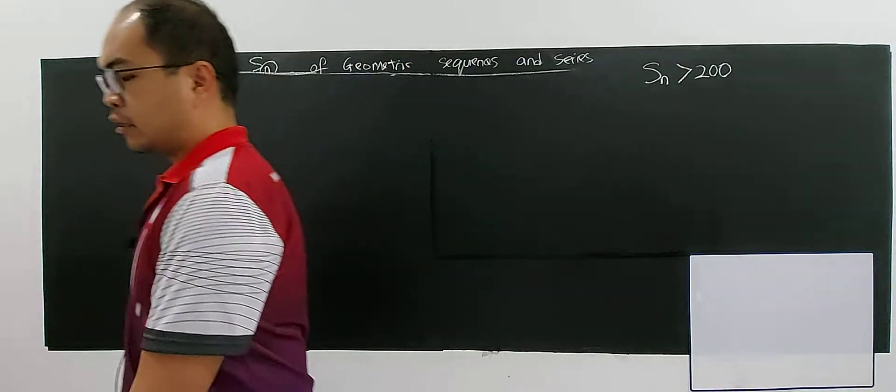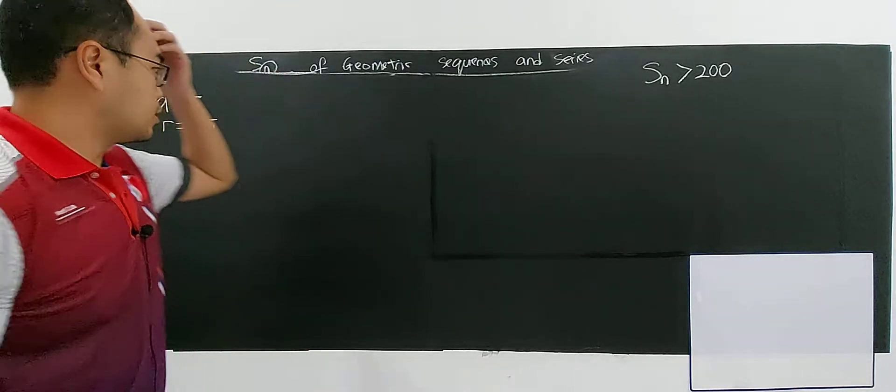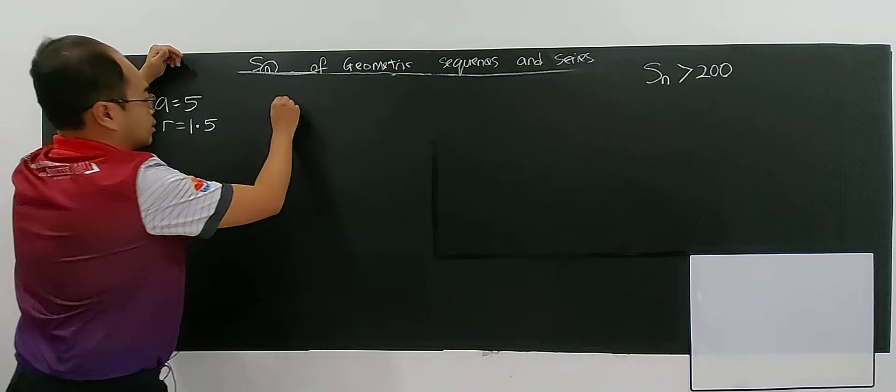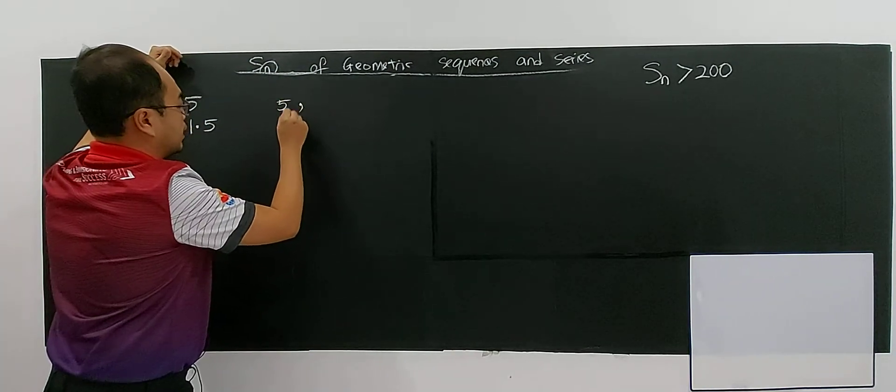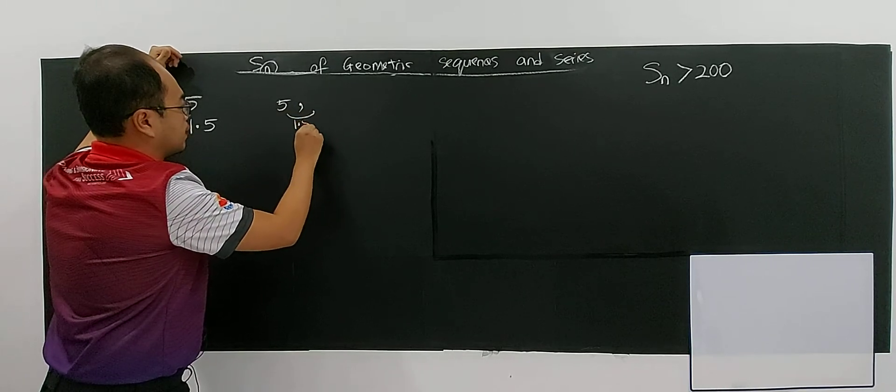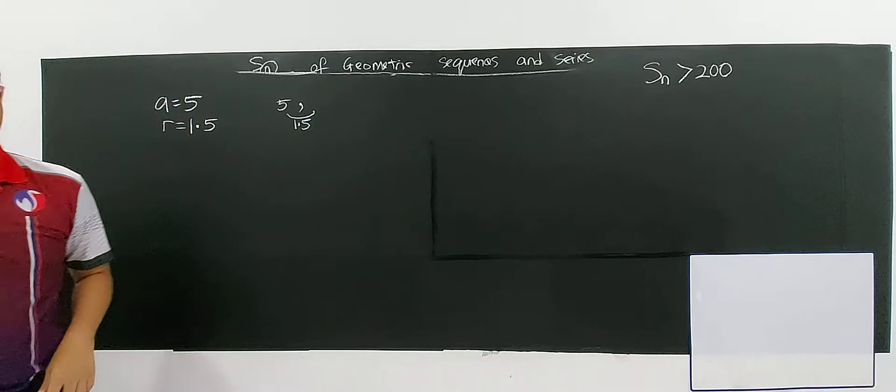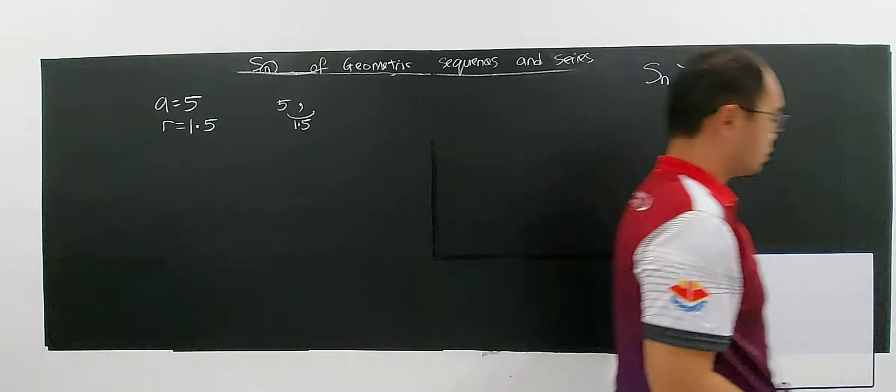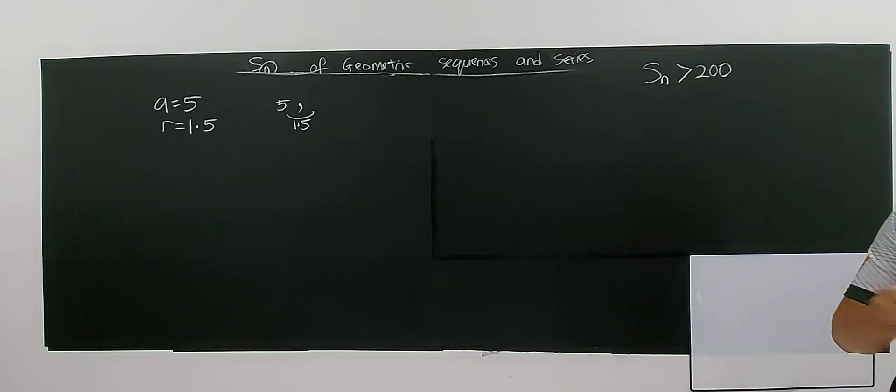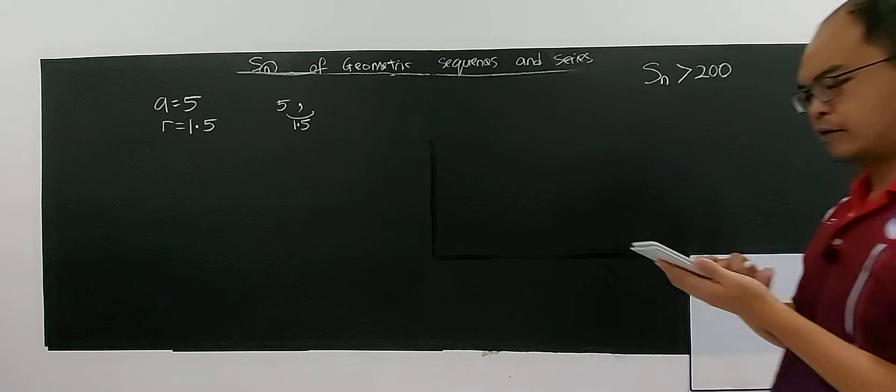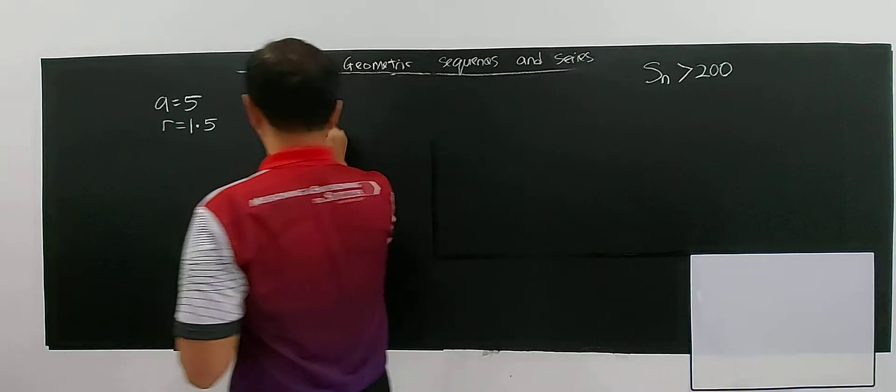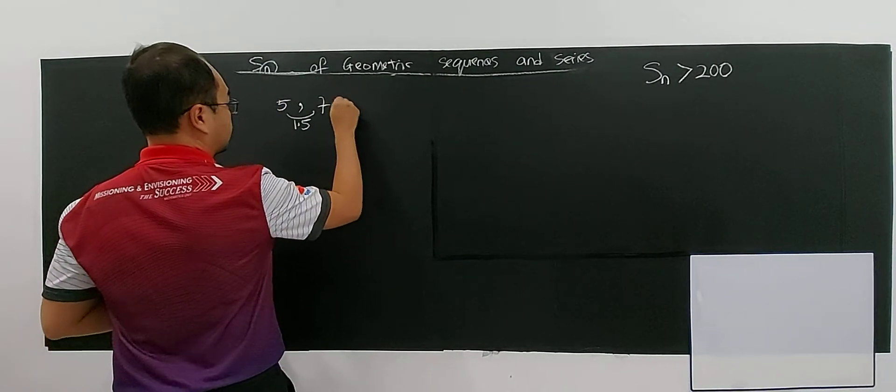So means that if I've given you a first term to be 5, and if you keep multiplying by 1.5, you take 5 multiply by 1.5, you will get 7.5. 1.5 multiply 5, you have 7.5.